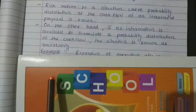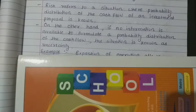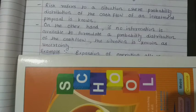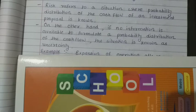On the other hand, if no information is available to formulate a probability distribution of the cash flow, then the situation is known as uncertainty. That is, when we are not able to determine the probability distribution — we cannot assign probability to how likely the cash flow will be received — such a situation is called uncertainty.